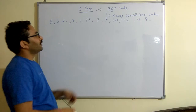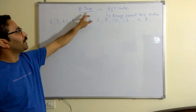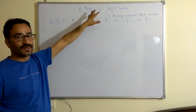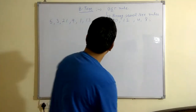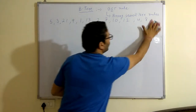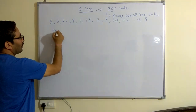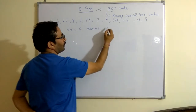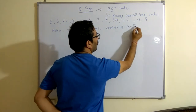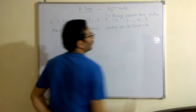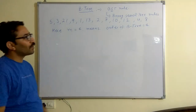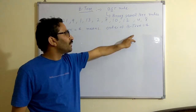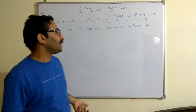Our next question is to make a B3 from these elements. As we already discussed the different properties which B3 satisfies, here we are just going to solve the question. N is equal to 4, meaning the order of B3 is equal to 4. The maximum number of children of an internal node is 4.